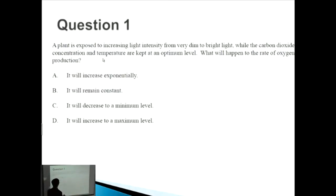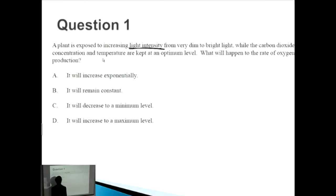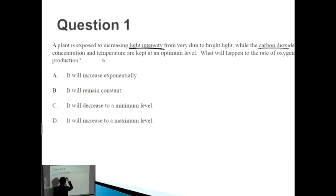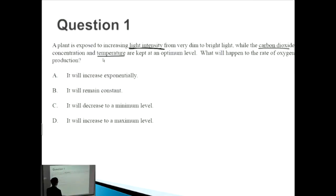We're talking about photosynthesis in this question. The independent variable being changed is light intensity, and the other variables — carbon dioxide and temperature — are kept fixed. That's very important, because if you change multiple variables at one time, you won't be able to measure what the outcome is as a result of that change.